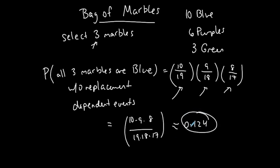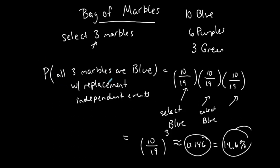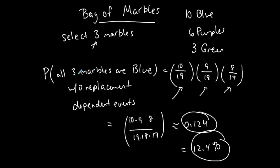The probability in decimal form is 0.124, or 12.4%. You can see that the probability decreased compared to the with-replacement case of 14.6%. If I'm not putting the marbles back and picking three blue marbles, my probability decreases, which makes sense because I'm decreasing the amount of blue marbles in the bag, so the likelihood of getting a blue each time goes down.